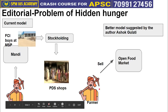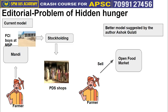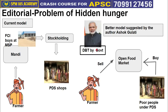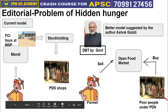Under this market model, poor people who currently receive food through PDS would also buy from the open market. The obvious question arises — won't farmers be exploited and won't poor people have to pay much more in the open market? The solution proposed is DBT — Direct Benefit Transfer by the government. Instead of holding public stock, the government would directly transfer money into the accounts of beneficiaries.